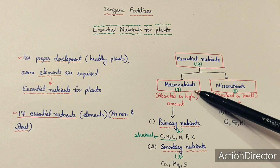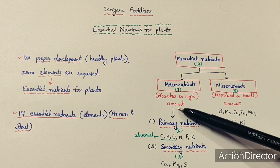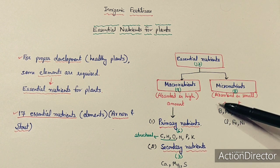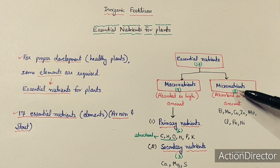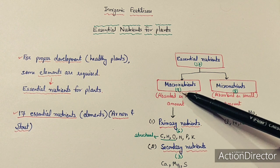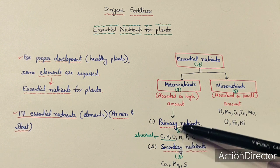Macronutrients — 'macro' meaning large — are absorbed by plants in a higher amount. Micronutrients are absorbed in a smaller amount and are therefore known as micronutrients. There are eight micronutrients and nine macronutrients in total.